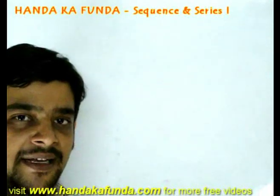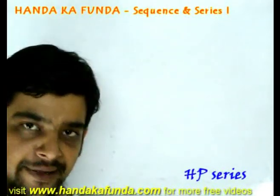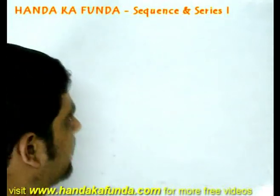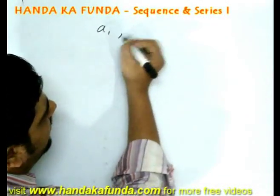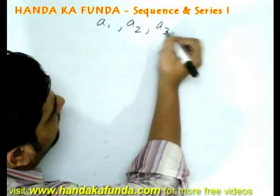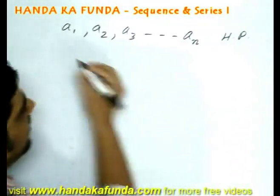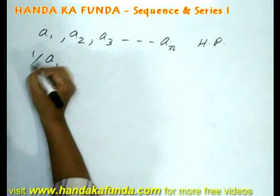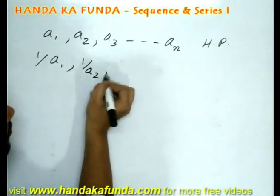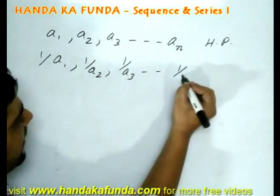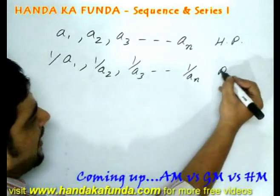Terms are said to be in a harmonic progression if their reciprocals are in an AP. What I mean is a1, a2, a3, and an will be in a harmonic progression if 1 by a1, 1 by a2, 1 by a3, and 1 by an are in an AP.